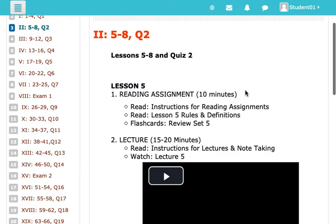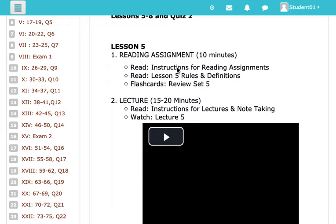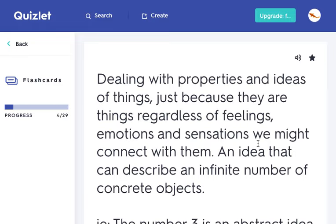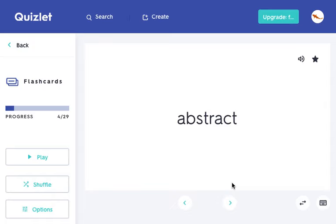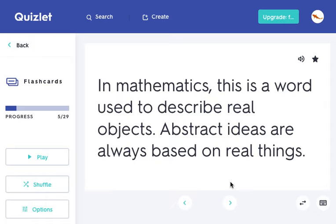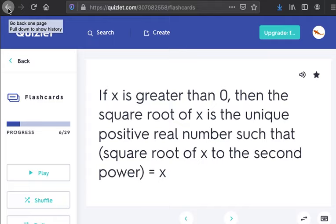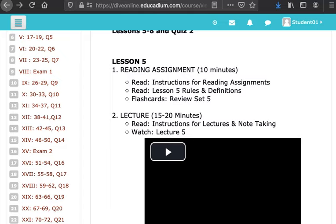If you take a look at part 1, the reading assignment, there's some things to read there. Instructions for your reading assignment, and you can click and read those. We have Lesson 5 rules and definitions and some flashcards. You can go to these Quizlet flashcards. You can just scroll through them. You click on them. You click on the bottom there to see what that definition is. Click the arrow to go to the next one.